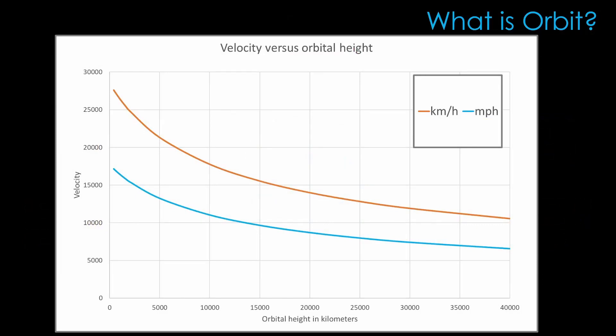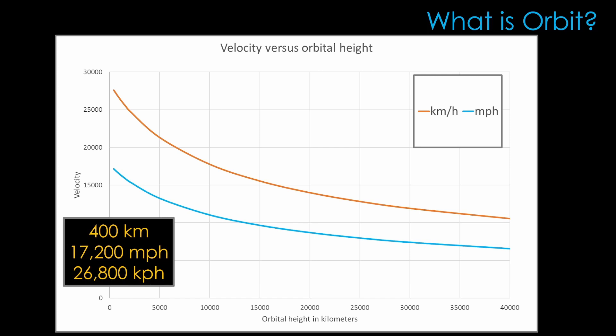We can chart the speed at various altitudes. Way down at 400 kilometers, the orbital speed is about 17,200 miles per hour, or 26,800 kilometers per hour.